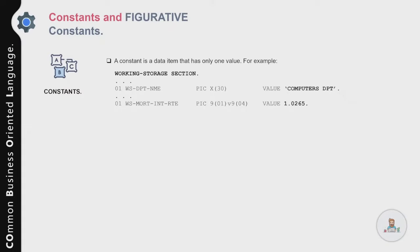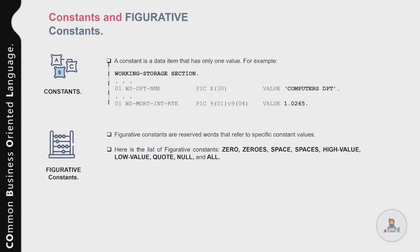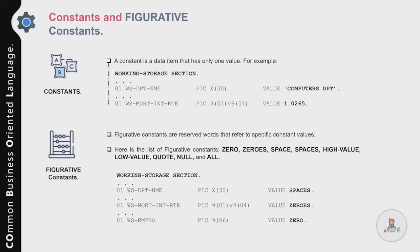Now let's move on to figurative constants. Figurative constants are reserved words that name and refer to specific constant values. Here is a list of figurative constants you can use in your COBOL program: ZERO, ZEROS, SPACE, SPACES, HIGH-VALUE, LOW-VALUE, QUOTES, NULL, and ALL, along with a few more variants.